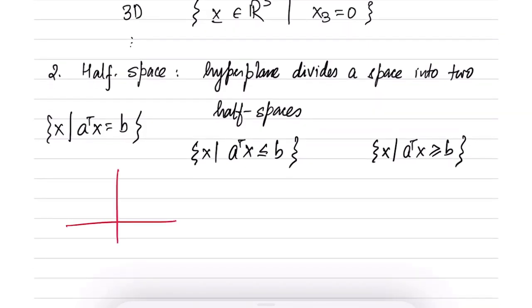So pictorially you can imagine that this is the hyperplane, which is a line in 2D. And on one side you have one half space and on the other side you have another half space. So these are the two half spaces and the red line, which is the hyperplane, divides the space into two half spaces.